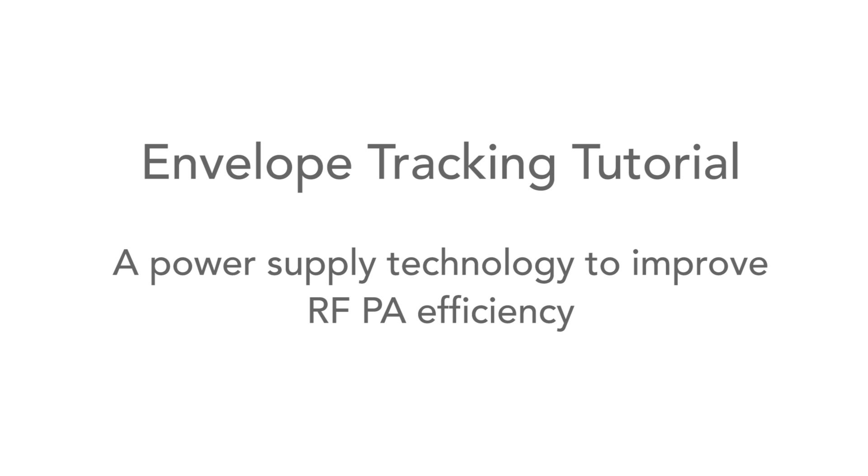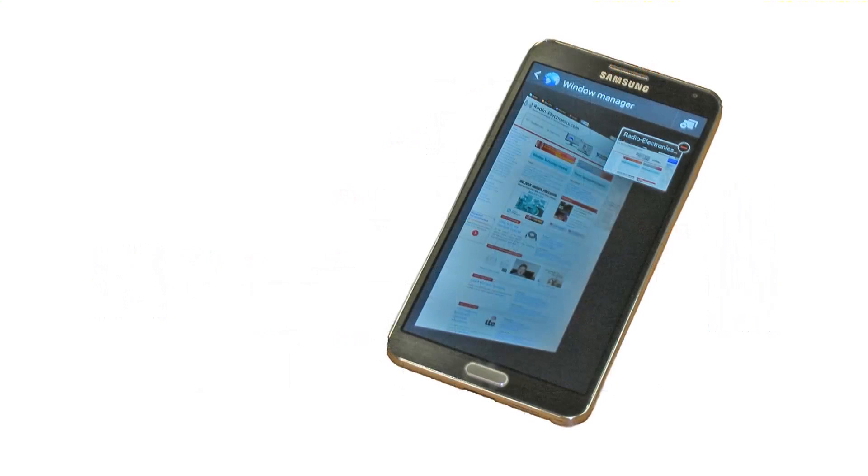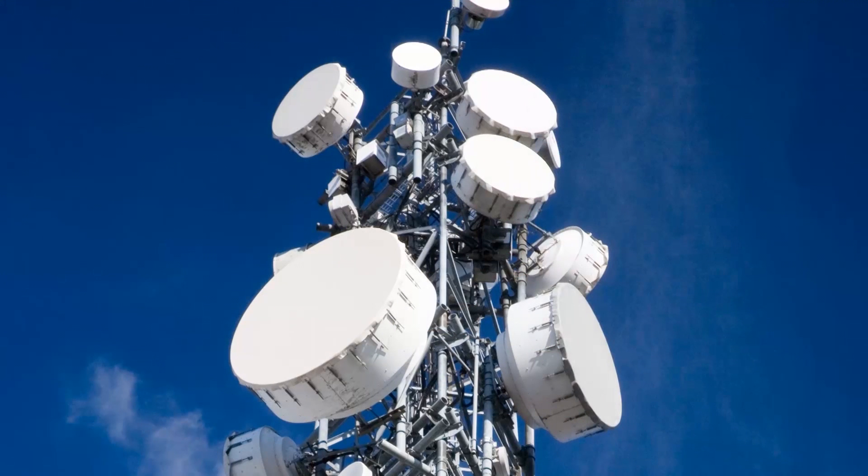Envelope tracking is a technology associated with RF power amplifiers. It enables considerable improvements to be made in terms of power efficiency. As efficiency becomes a much greater issue because of concerns about battery life and green operation, the technology is being used in everything from mobile phone handsets to cellular base stations and broadcast transmitters and many more areas as well.